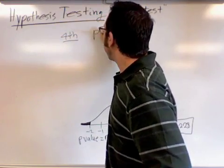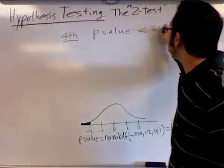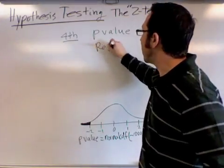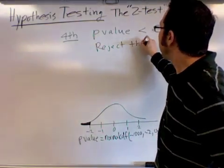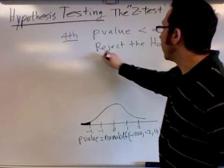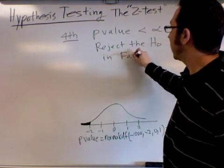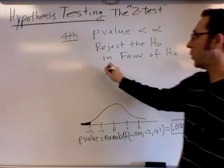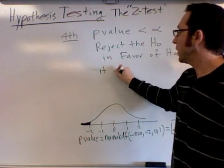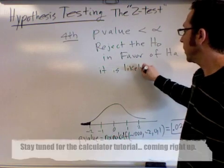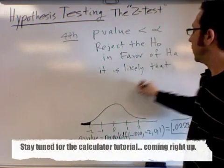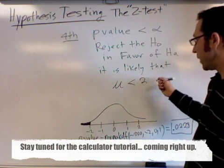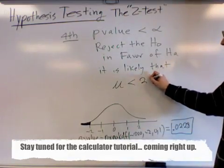We'd say that our p-value is less than 5%. So since that's true, we will reject the H₀ in favor of the alternative hypothesis. So it is likely that the mean number of coffee cups drunk per week that Americans drink per week is less than 21.